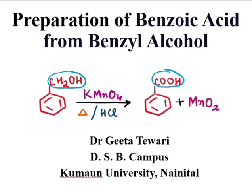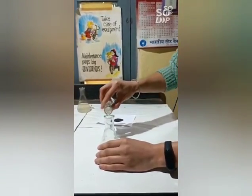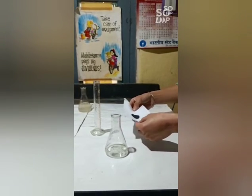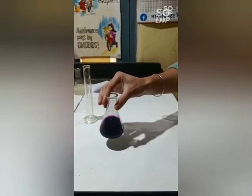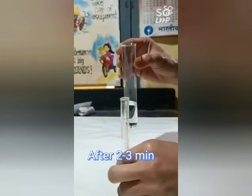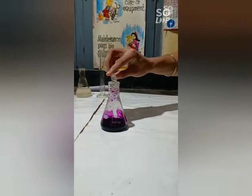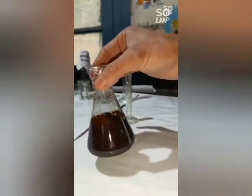This exercise will take about half an hour to complete and we will obtain white colored benzoic acid. Let's start the preparation. Today we are preparing benzoic acid from benzyl alcohol. For this we take a conical flask, add 30 ml of distilled water, then 1.5 grams of KMnO4 (potassium permanganate), and boil this solution on the hot plate. We then add 1 ml of benzyl alcohol.